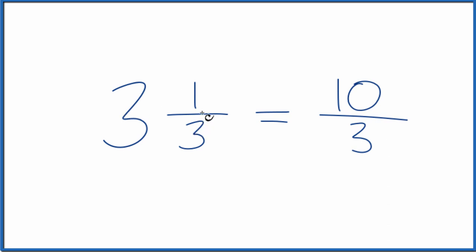So the mixed number 3 and 1/3 equals the improper fraction 10/3, or 10 over 3.